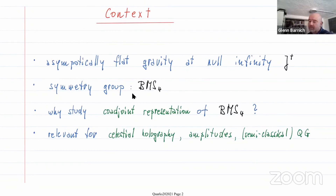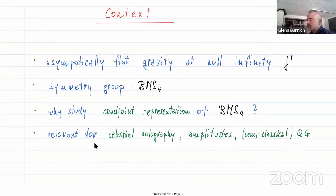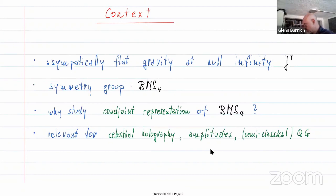This is a fairly straightforward technical question, but I hope that in the course of setting it up the way I do, you will recognize some of the techniques that might be useful to generalizations or to other infinite dimensional groups. This kind of group and its co-adjoint representation is relevant for celestial holography, for scattering amplitudes between sky minus and sky plus, and also for semi-classical quantum gravity.